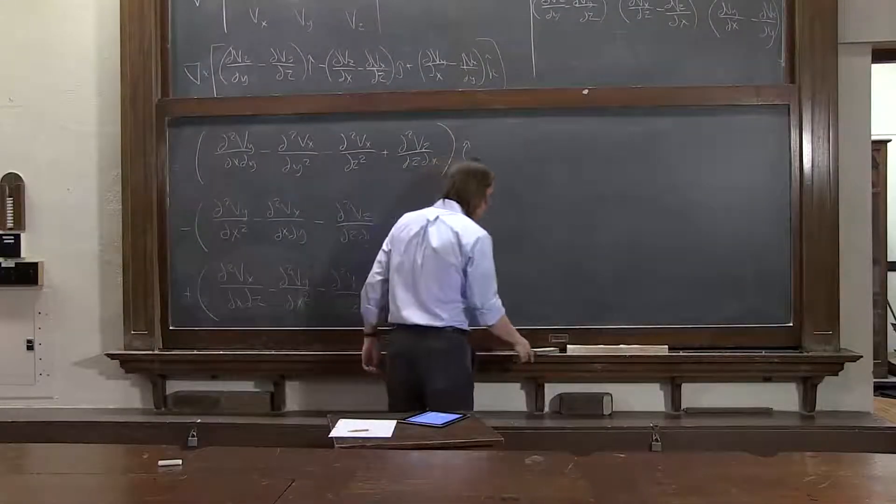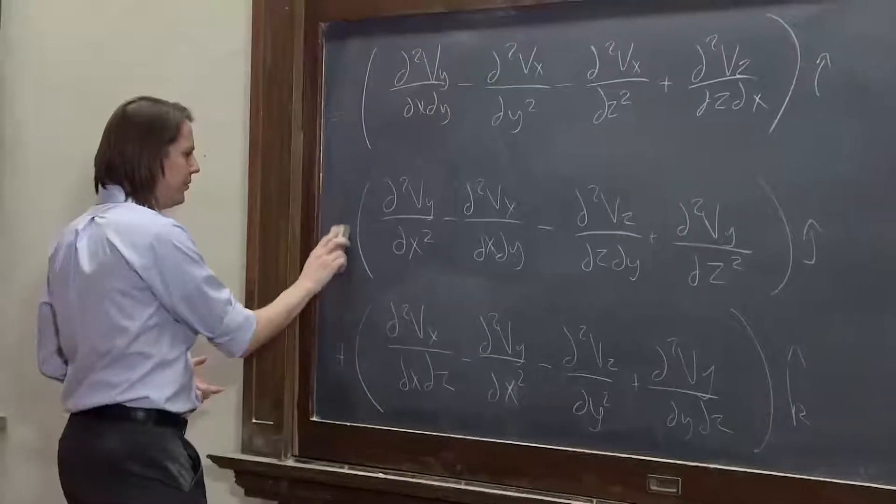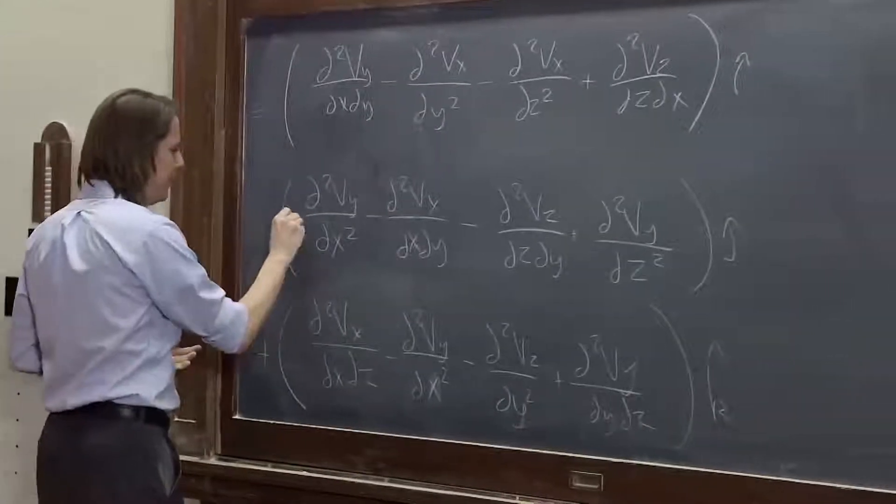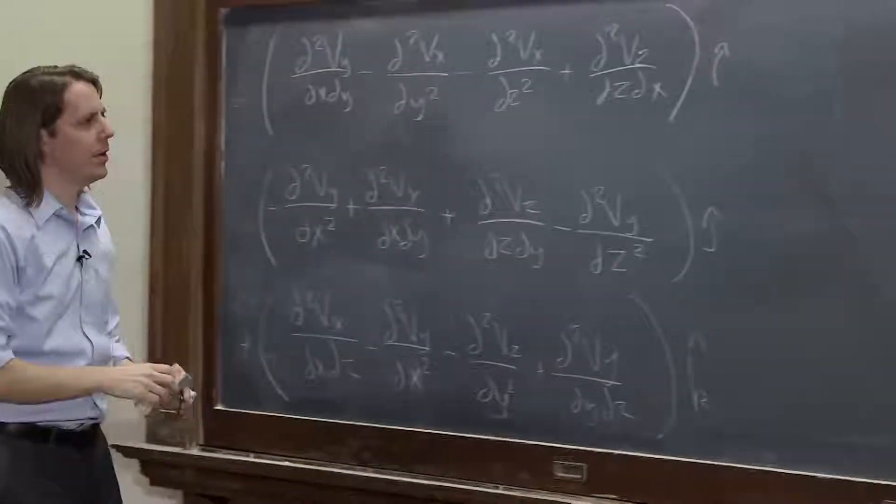Now, we have taken our derivatives. Now we're going to mess with it a little bit. First of all, let's distribute this negative sign. Negative, positive, positive, negative. Fine, that helped.